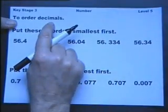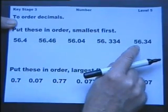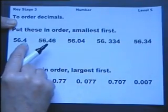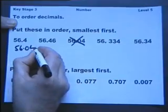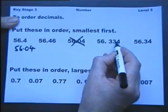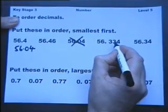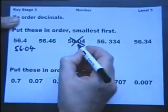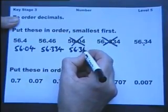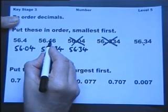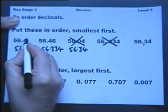Now, ordering decimals — put these in order smallest first. We have 56.4, 56.46, 56.33, and 56.34. The smallest is 56.33, followed by 56.34. Then comes 56.4, and the largest is 56.46, since 56.46 is larger than 56.4.